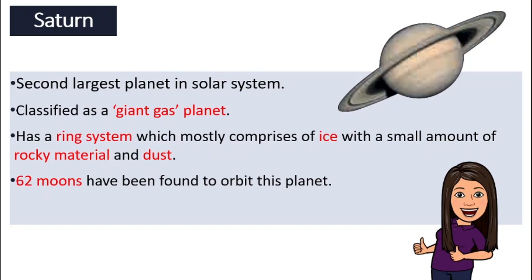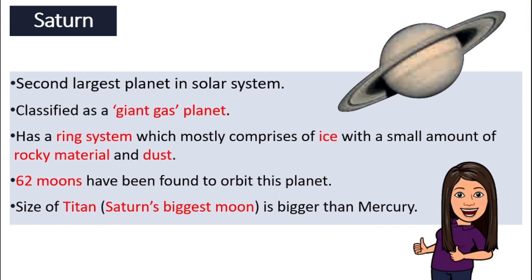Saturn also has a lot of moons — 62 of them. One of the moons here is very big; it is Saturn's biggest moon called Titan. Titan is even bigger than Mercury, the smallest planet in our solar system. So Mercury, the smallest planet, is even smaller compared to Titan, the biggest moon of Saturn.